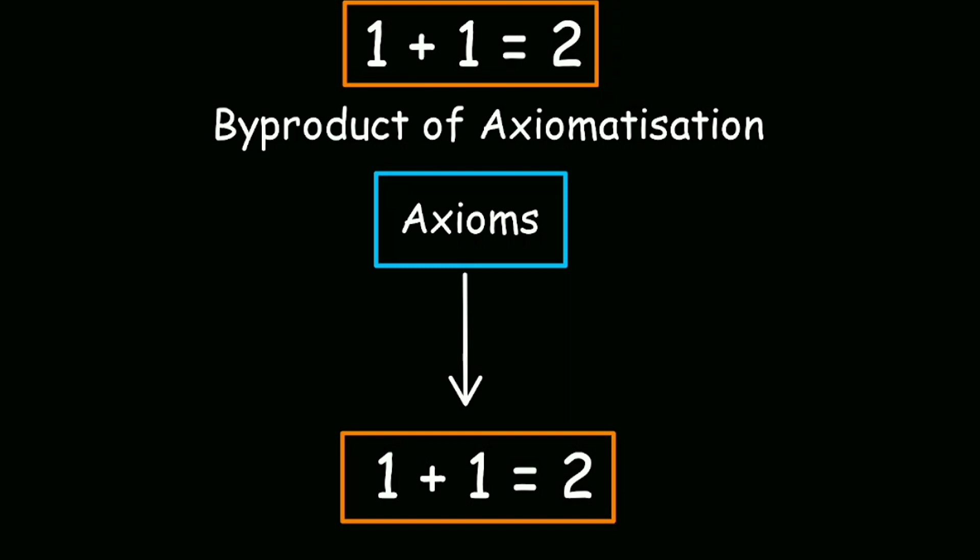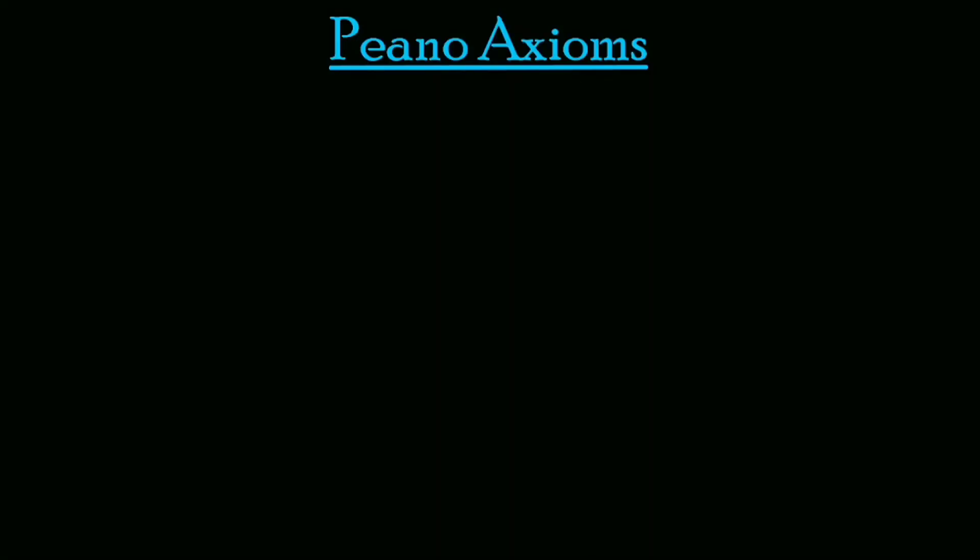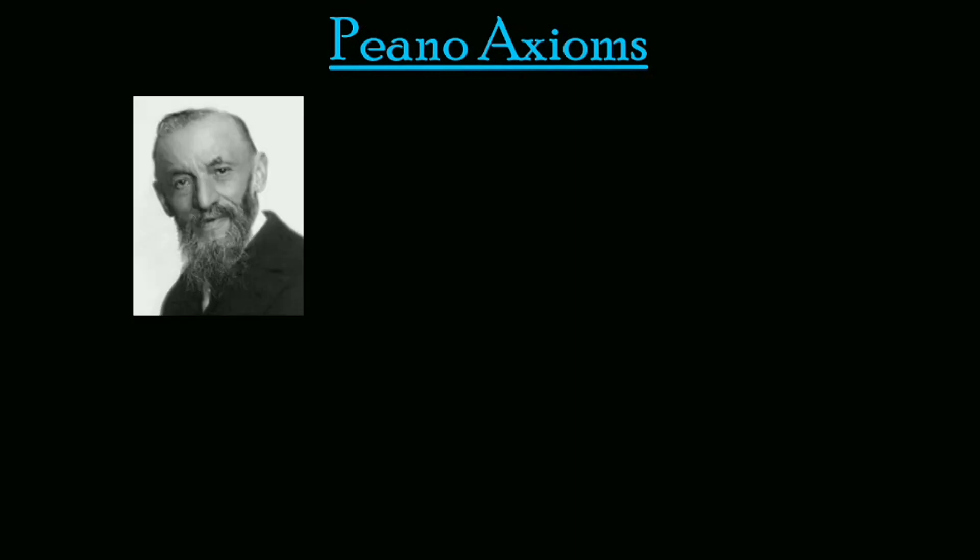But before that, let me introduce you with the infamous Peano axioms. Peano axioms are a set of axioms for the natural numbers first formulated by Italian mathematician Giuseppe Peano by the end of the 19th century. These axioms are effective in defining natural numbers and their properties including operations like addition, multiplication, and equality relation. Almost everything we know about basic arithmetic can be deduced from these few axioms.